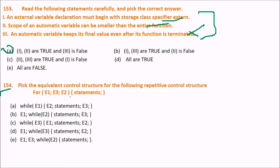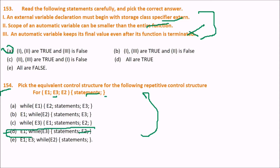Pick the equivalent control structure for the repetitive control structure: for(e1; e3; e2) statement. The answer is D: e1; while(e3) { statement; e2; } — this is the correct equivalent.